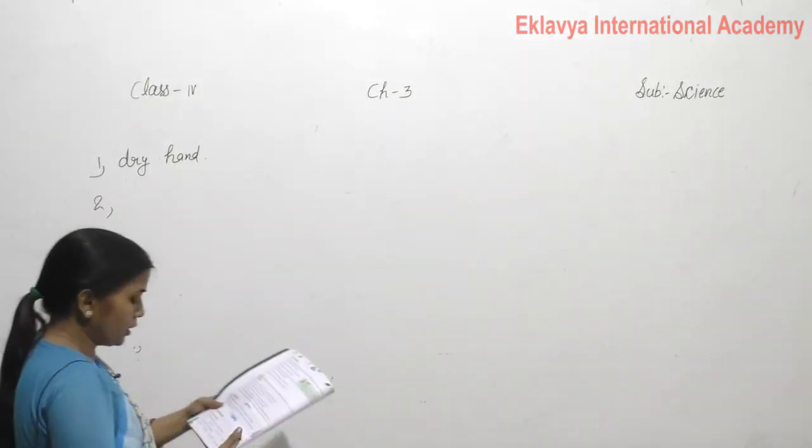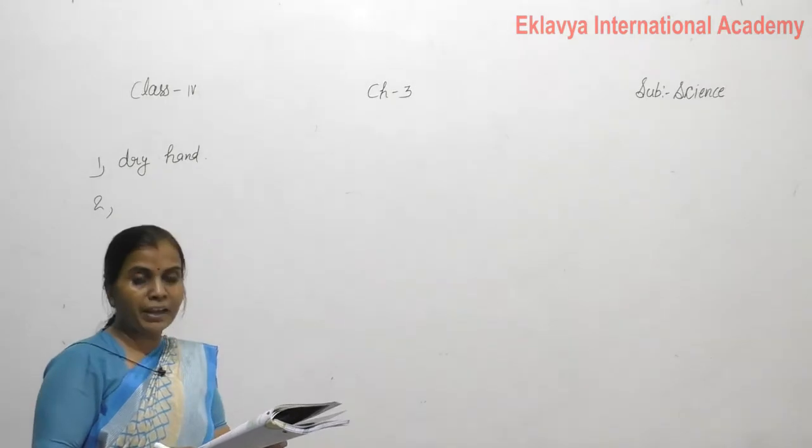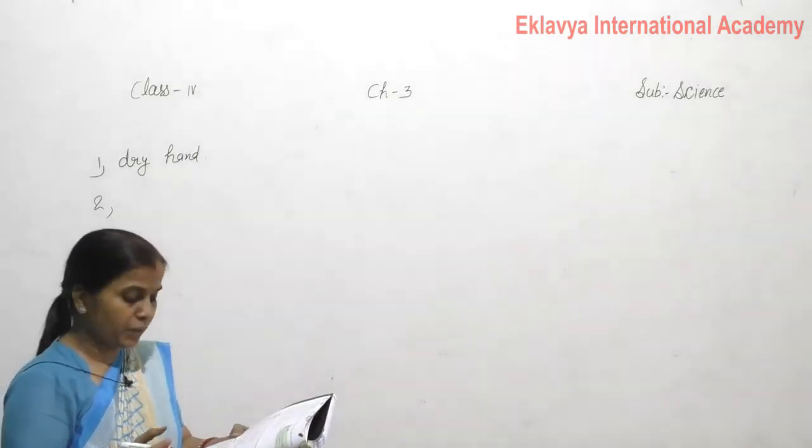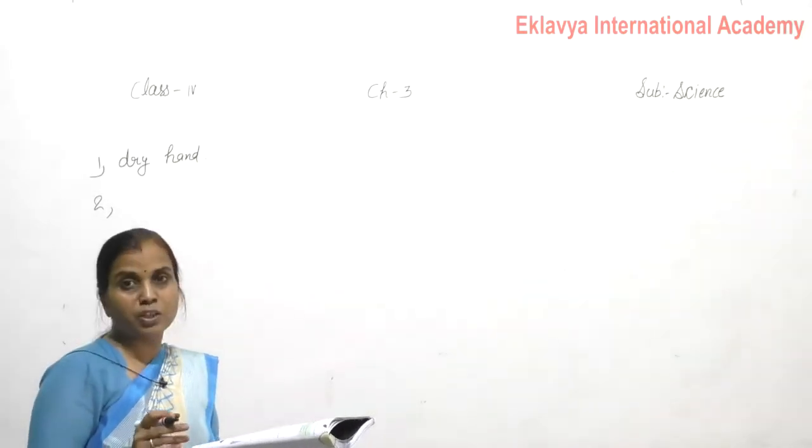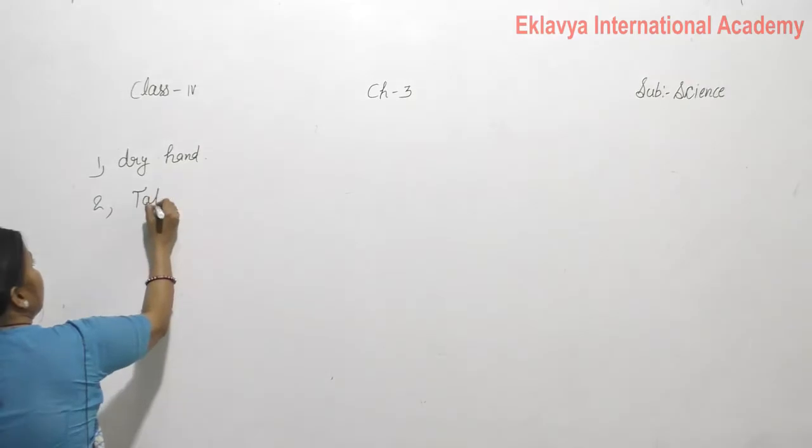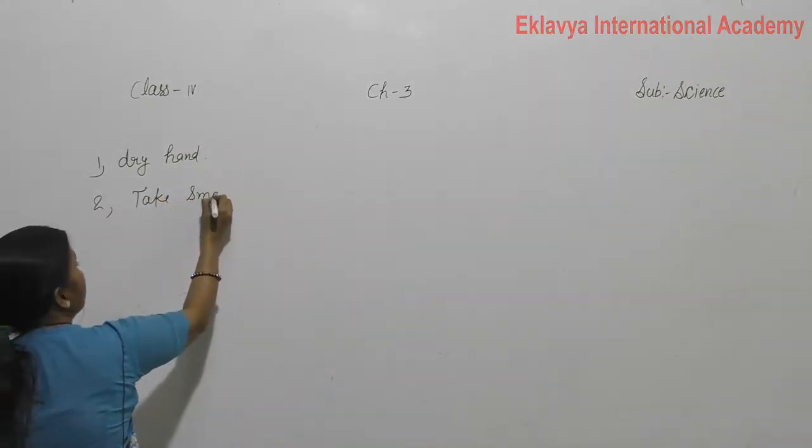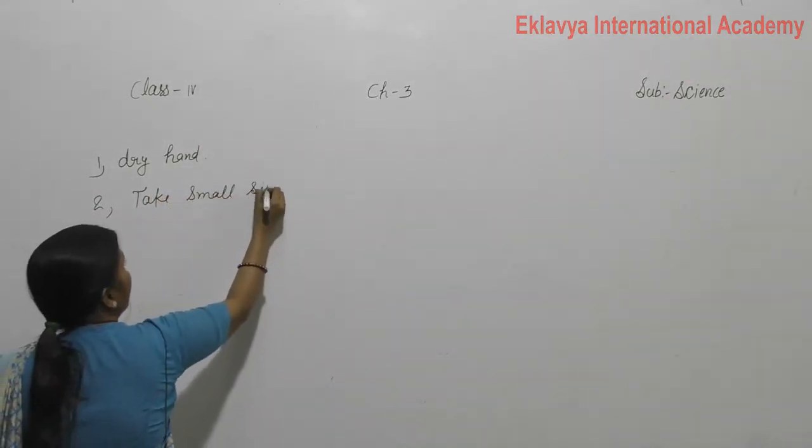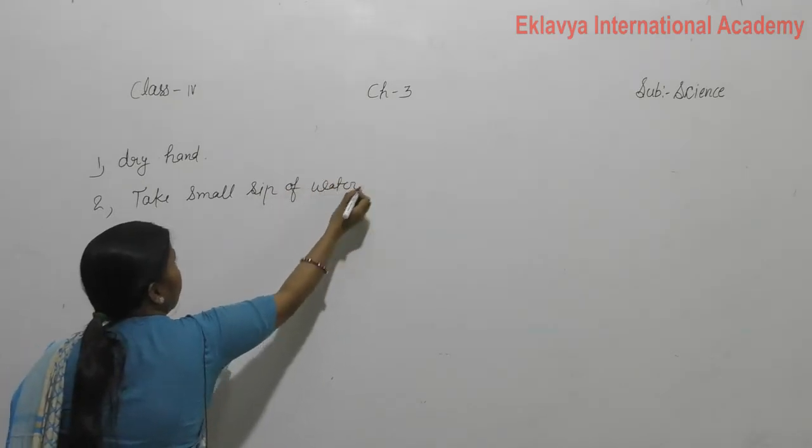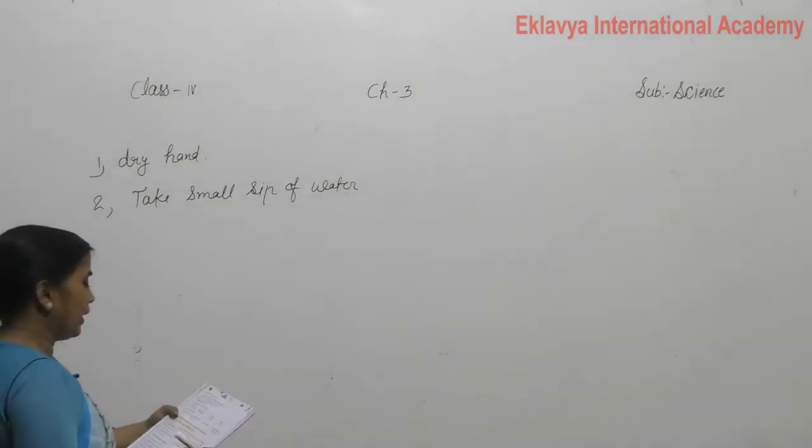Second question is, in case of food poisoning, make the person take small sips of water. Water sip by sip should be given.